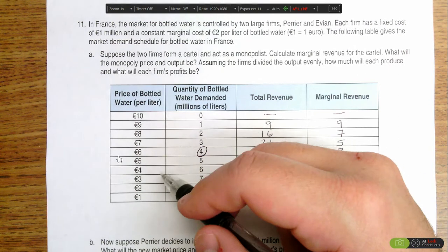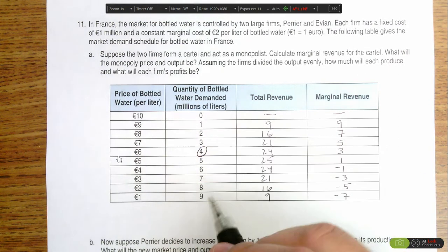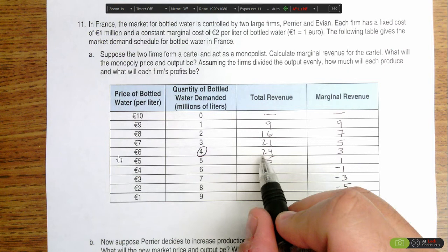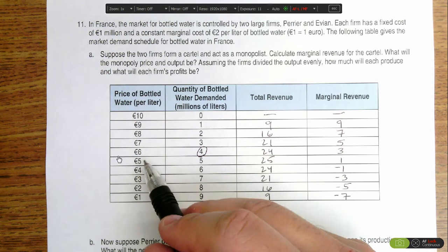So total revenue is price times quantity. Total revenue is 24 million euros, quantity is 4 million bottles, and the price is 6 euros.